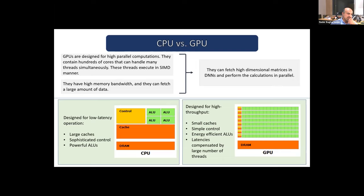GPUs don't need as much cache — a small cache is sufficient. You don't need sophisticated branch prediction. For those who might be computer architecture savvy, the GPU doesn't need a multi-level cache, branch prediction, and so on. So we have a lot of data parallel operations, and we have to move in that direction. We also see array processing as well.